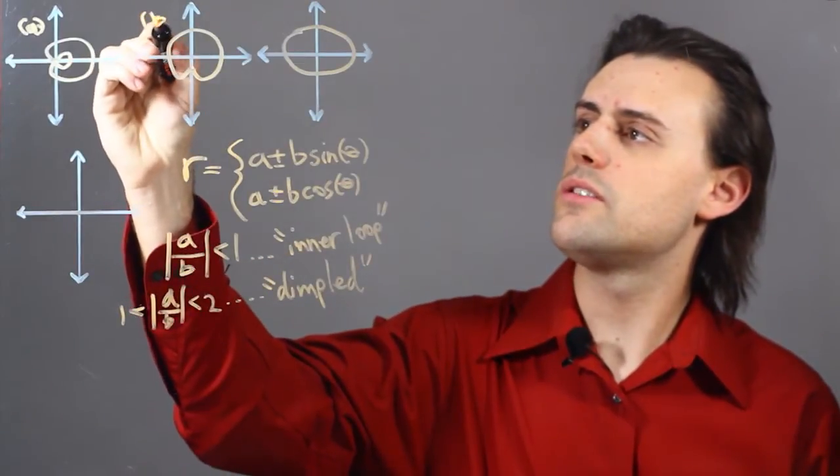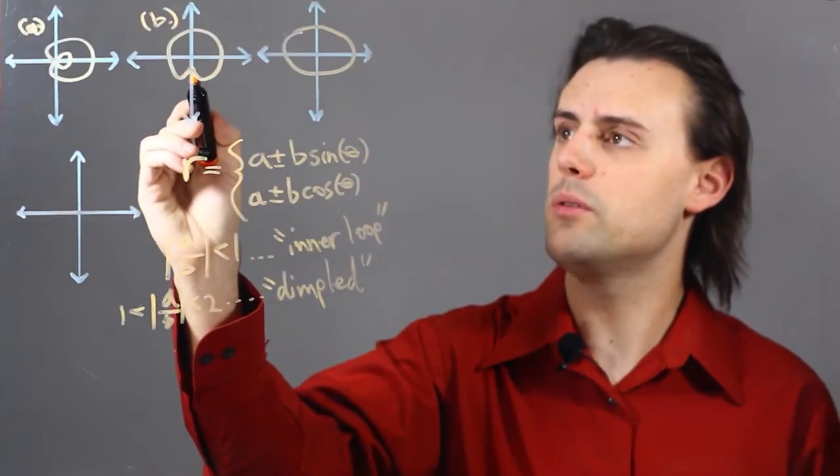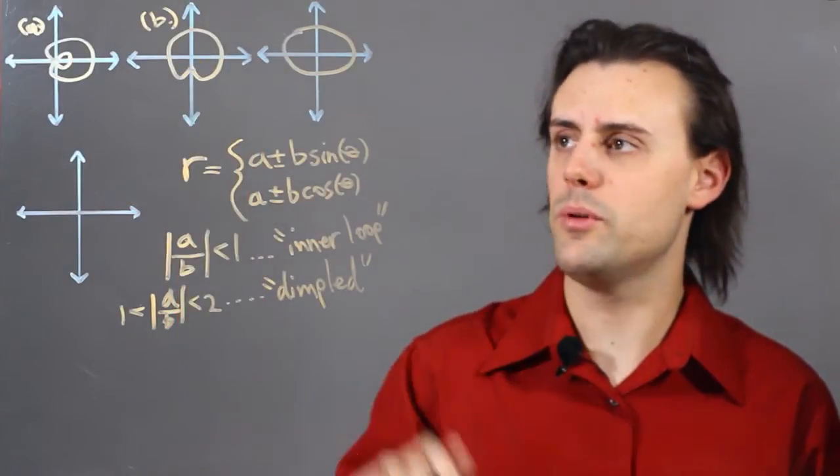So this second case, case b, is depicted here as an example, where it almost looks like a circle, but it has a dimple in it.